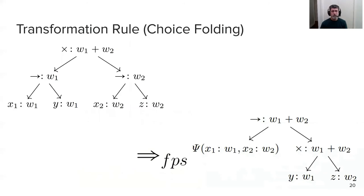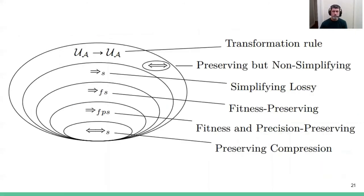This is an example transformation rule called choice folding, where we can simplify the model in a particular way. I won't go through this step by step, but I will point out that there's an explicit management of the weights of each node and the way they combine in the resulting tree. We identified 24 of these rules in the paper, and we classify them according to this scheme.